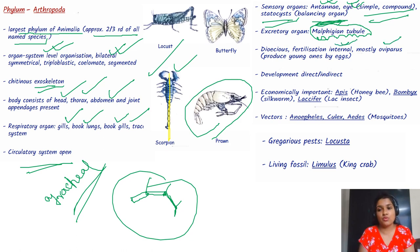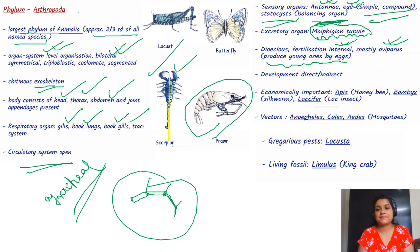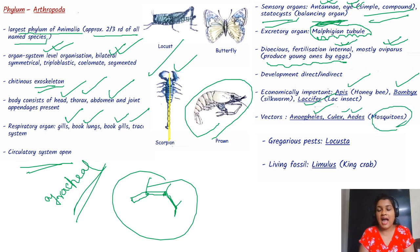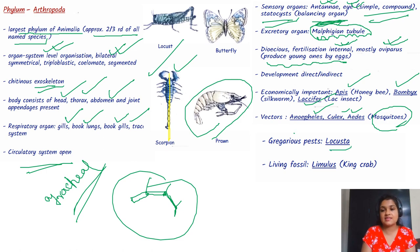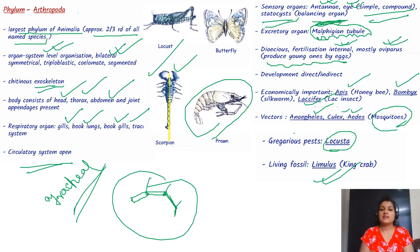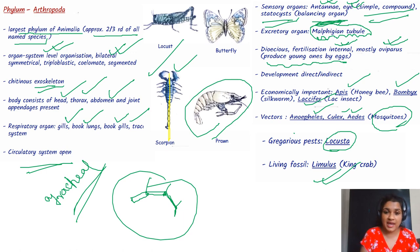Fertilization is internal and most are oviparous, meaning they produce young ones by eggs. Economically important examples are Apis (honeybee), Bombyx, and Laccifer. Vectors include Anopheles, Culex, and Aedes — all mosquitoes and carriers of dengue virus, malaria, and other diseases.